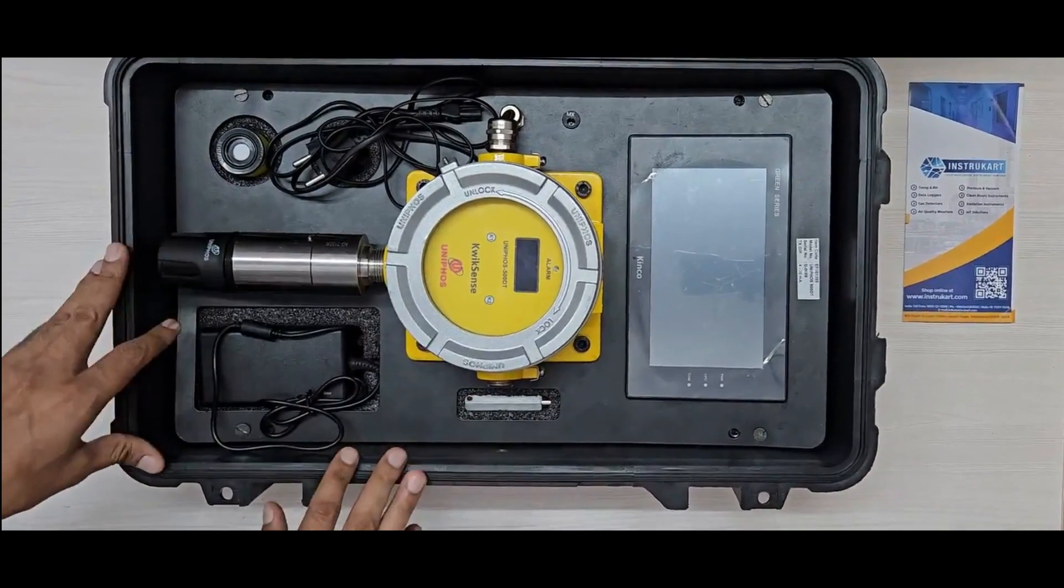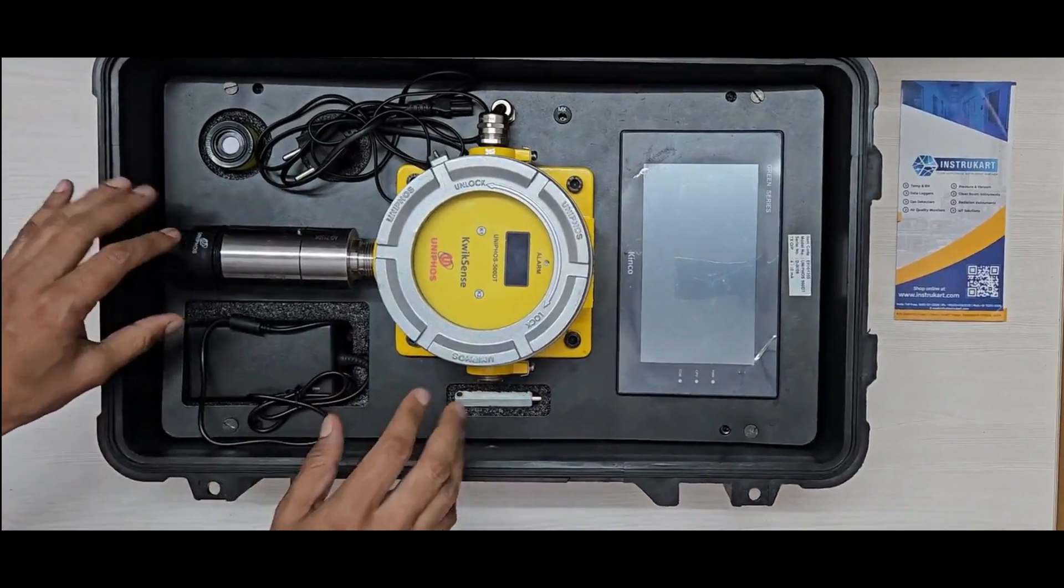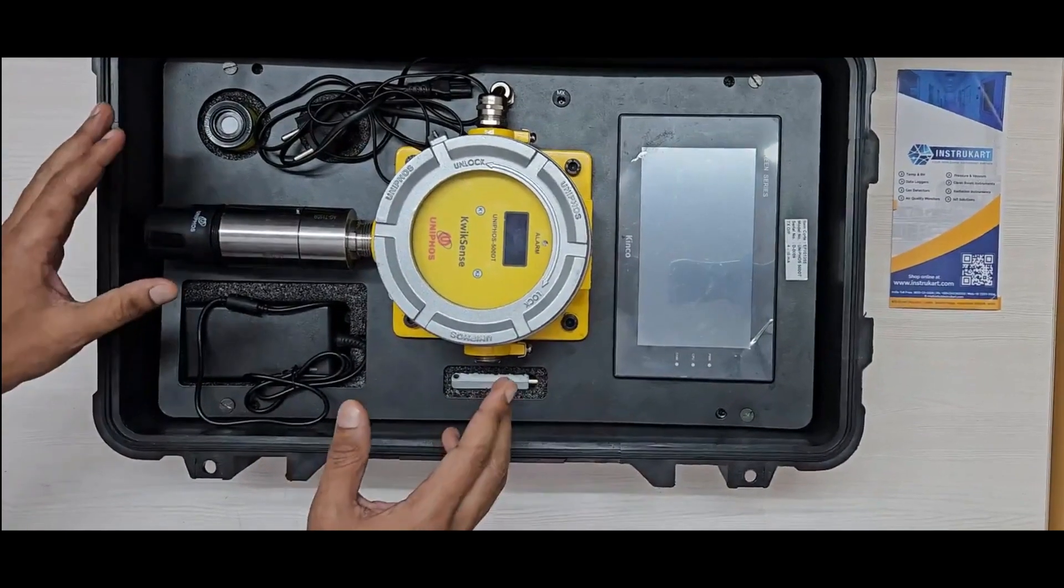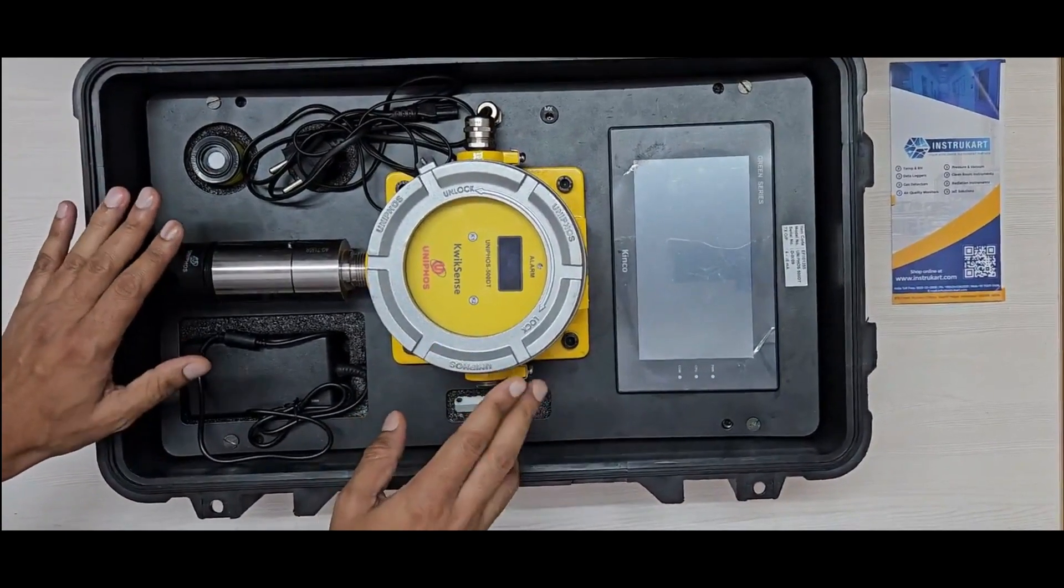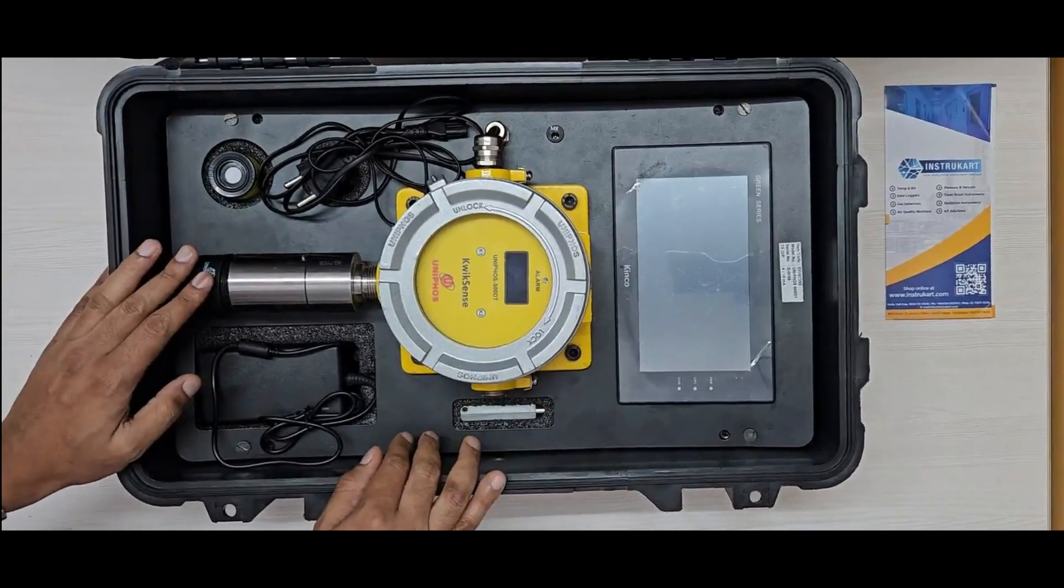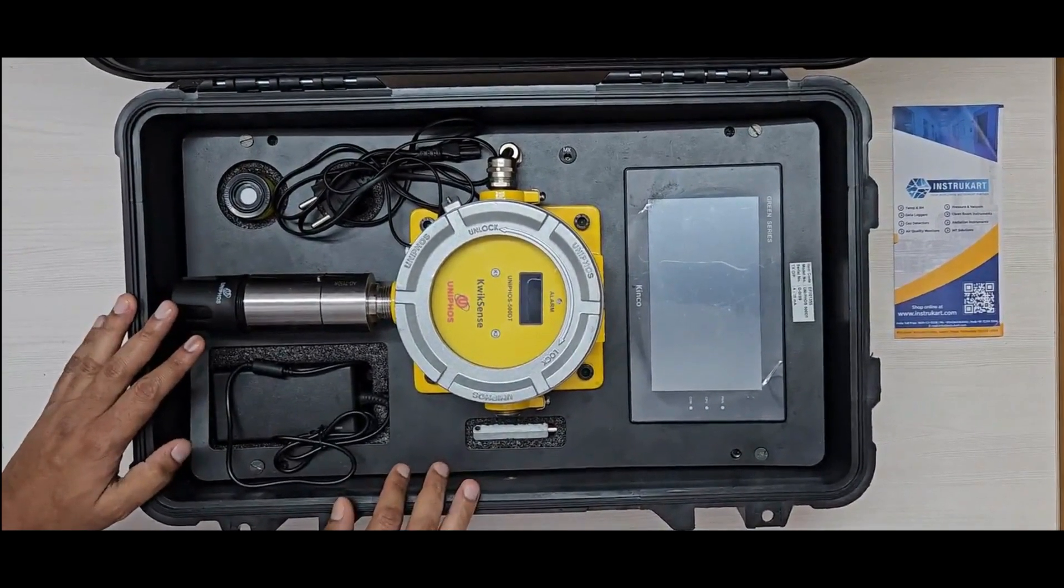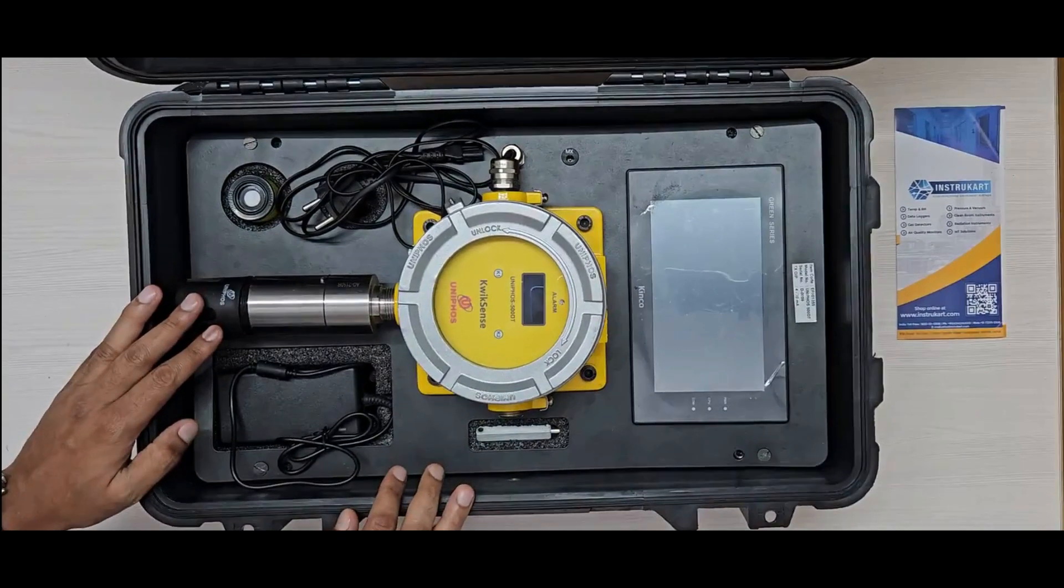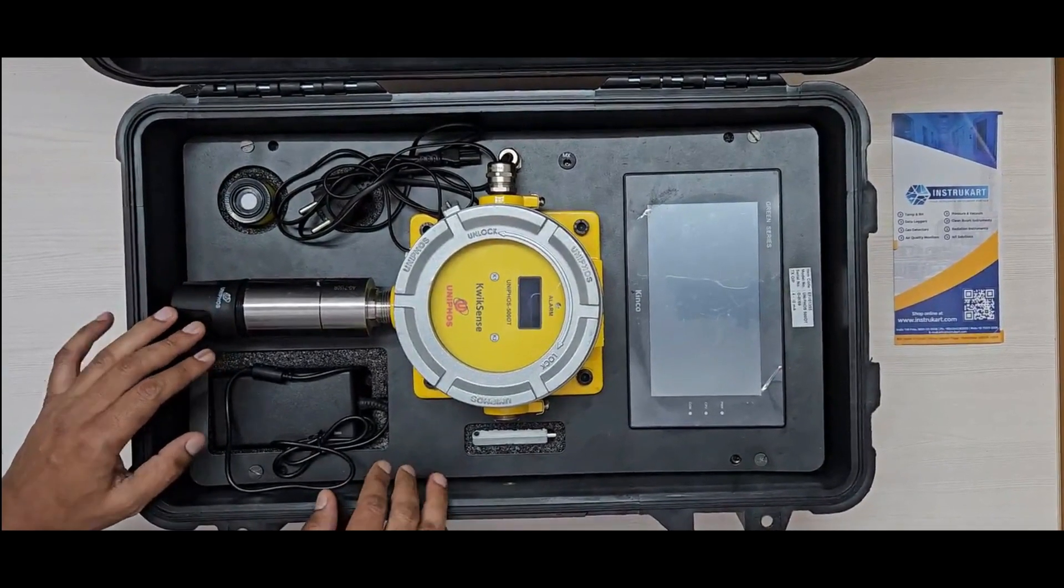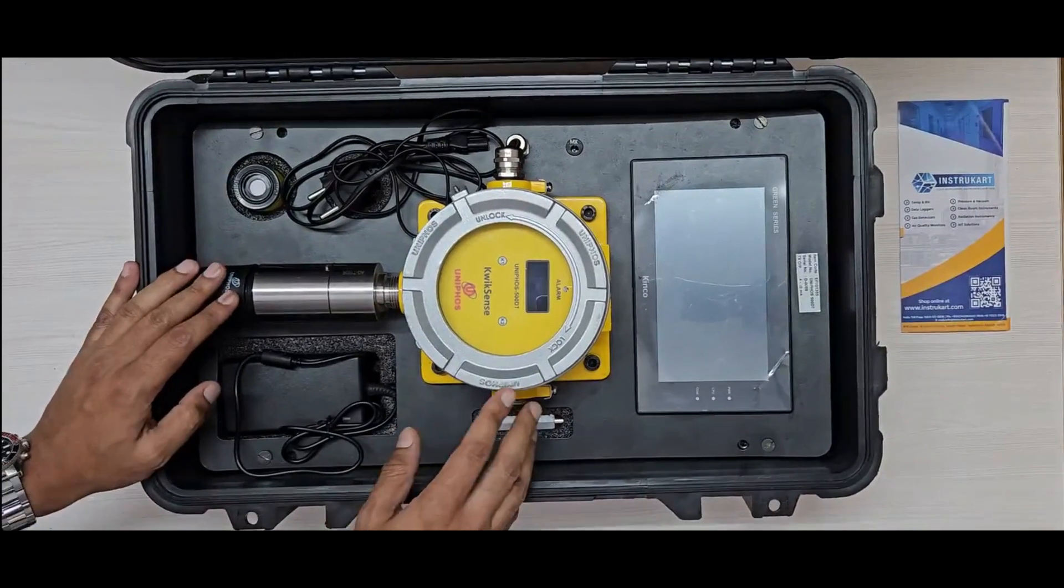This gas detector can detect more than 25 gases including electrochemical, NDIR, PID, or IR sensors at the same time, which makes it very powerful. It can be used in sensitive applications including petroleum, fertilizer, heavy machinery, oil and gas offshore and onshore, power plants, and many other applications where sensitivity is critical.